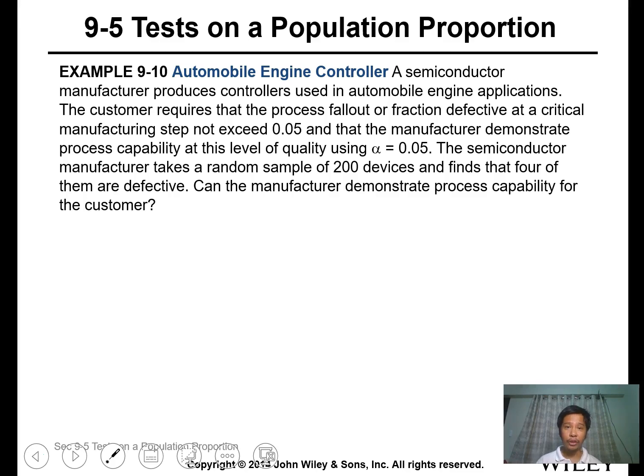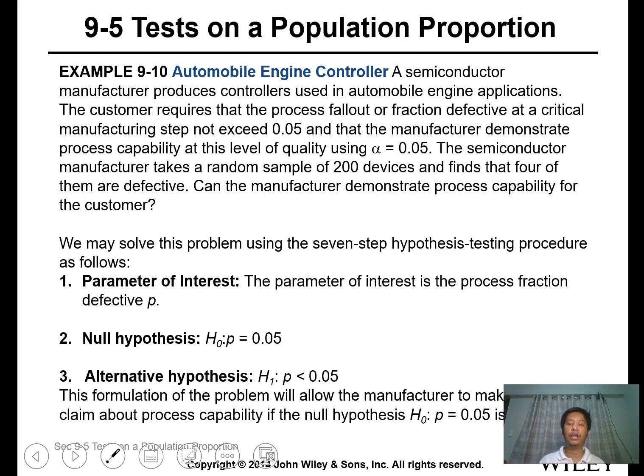Let's have the example: automobile engine controller. A semiconductor manufacturer produces controllers for automobile engine applications. The customer requires that the process fraction defective at a critical manufacturing step not exceed 0.05 and that the manufacturer demonstrates process capability using alpha 0.05. The manufacturer takes a random sample of 200 devices and finds 4 are defective. Can the manufacturer demonstrate process capability? The critical proportion should not exceed 0.05.